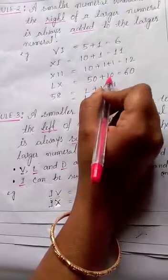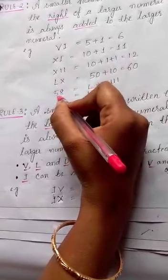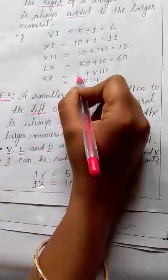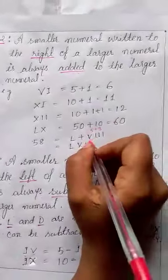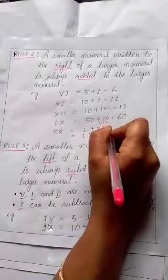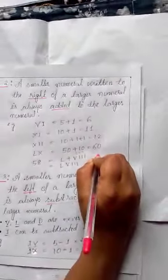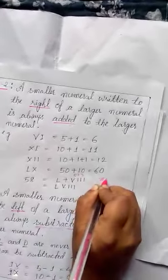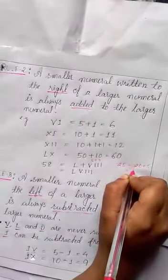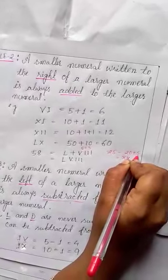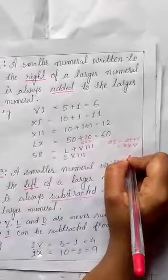LX means L is 50 and X is 10, so 50 plus 10 equals 60. Suppose we need to write 58 in Roman numerals: 50 is L, and 8 is 5 plus 3, so V plus III gives us LVIII. Similarly, 25 is 20 plus 5, so XX plus V gives us XXV.